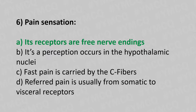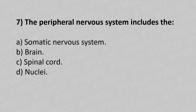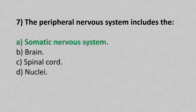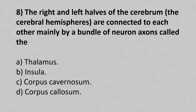Question 7: The peripheral nervous system includes — Option A: somatic nervous system. Option B: brain. Option C: spinal cord. Option D: nuclei. The answer is Option A — somatic nervous system.